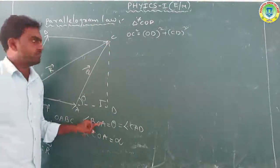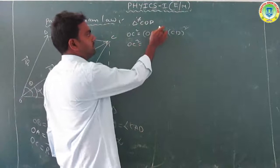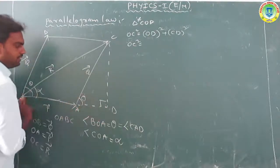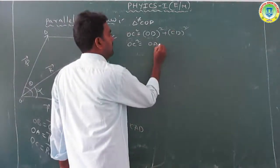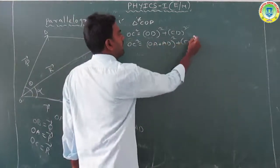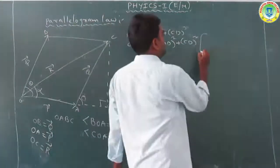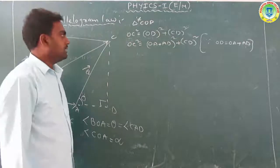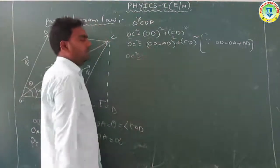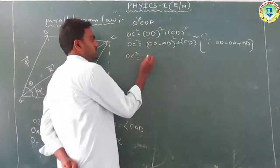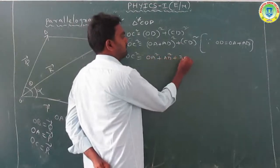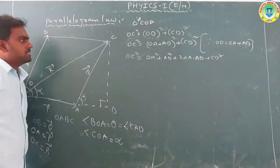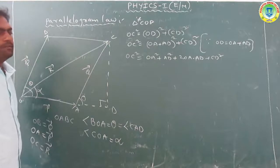So OC² = OA² + AD² + 2·OA·AD + CD². Now OD = OA + AD, substituting, OC² = OA² + AD² + 2·OA·AD + CD². This is equation 1. Now to find AD² + CD², we use the triangle CAD.